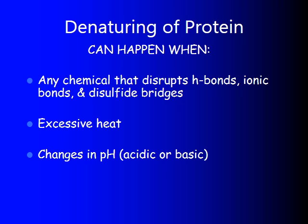Denaturing can happen when you put a protein in acid, disrupting hydrogen bonds, or when you disrupt ionic bonds or disulfide bridges through excessive heat or changes in pH. For example, when someone has a very high temperature — around 103°F that stays elevated for a long time, especially in young children — they should go to a hospital. The proteins in the brain can actually denature, losing their shape, potentially causing lasting mental damage. Doctors give fluids to cool the person down so the brain proteins don't cook themselves.